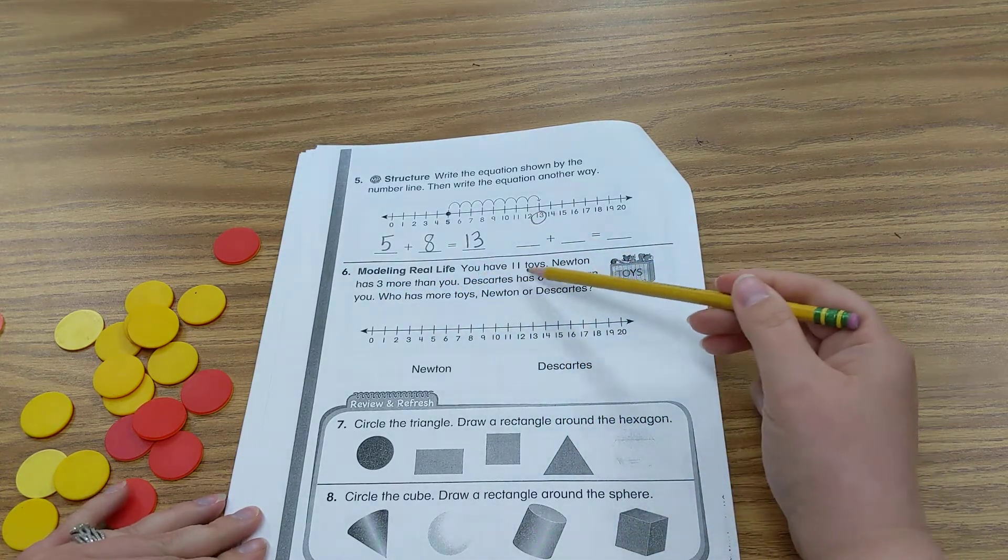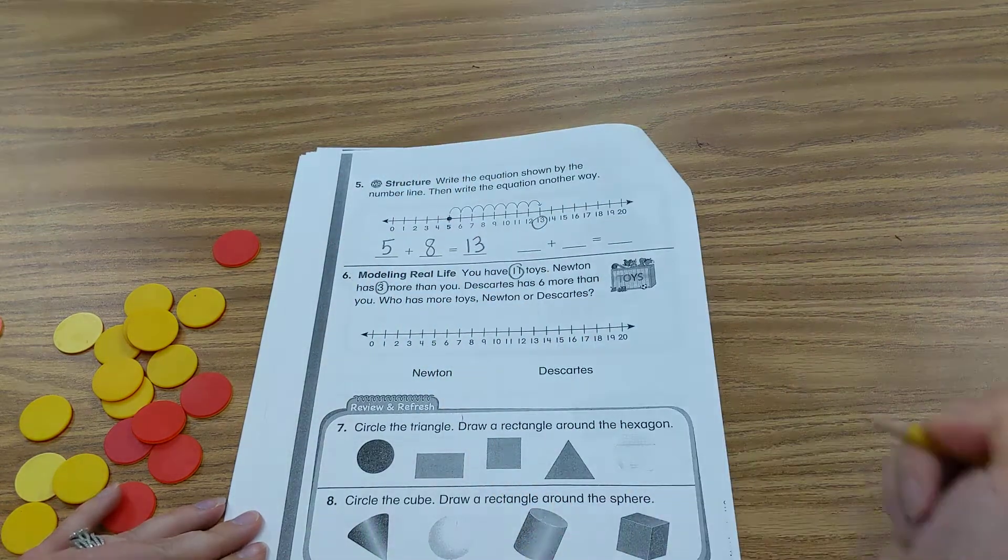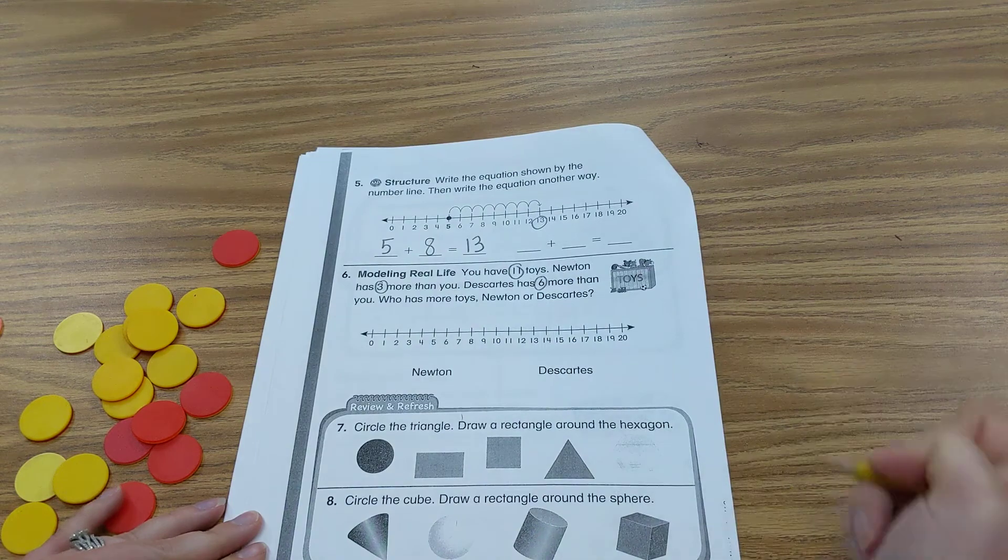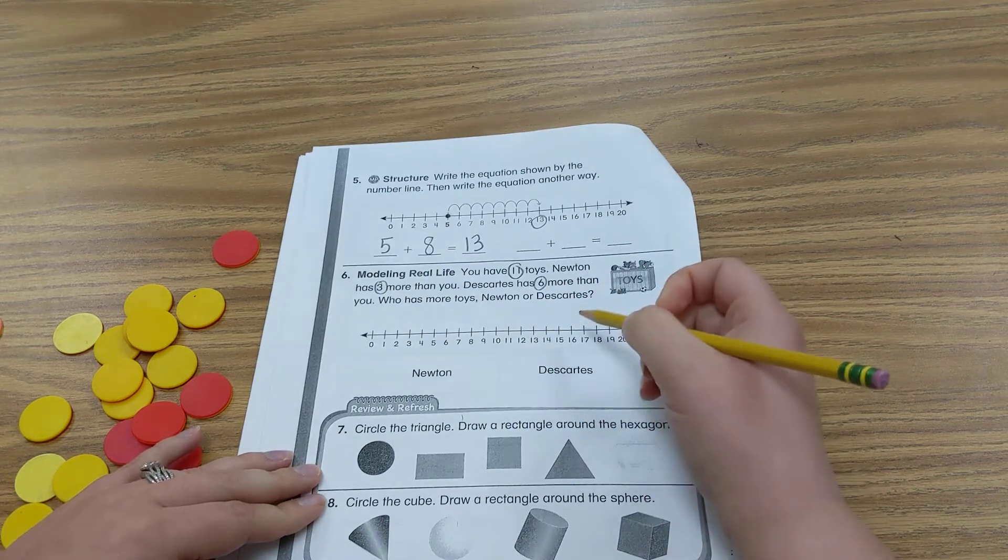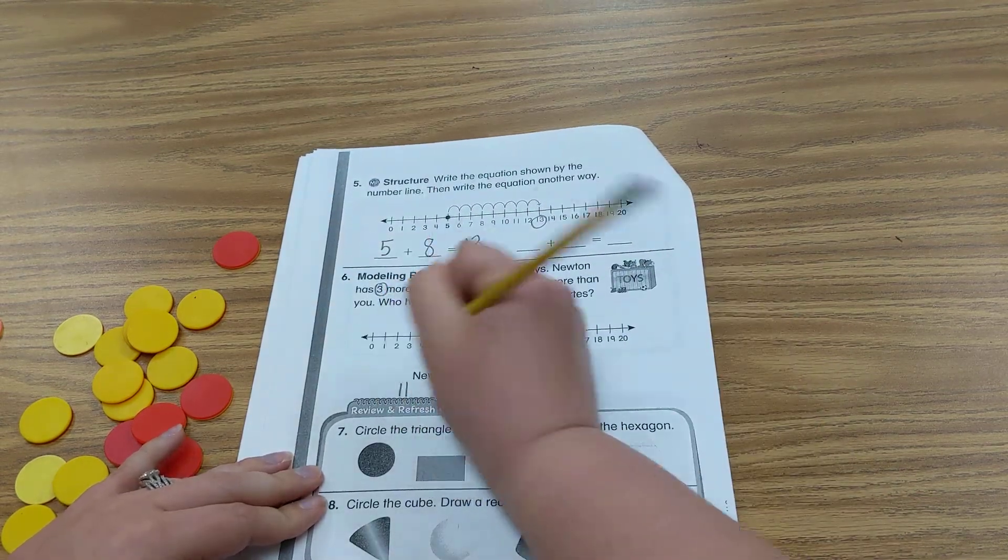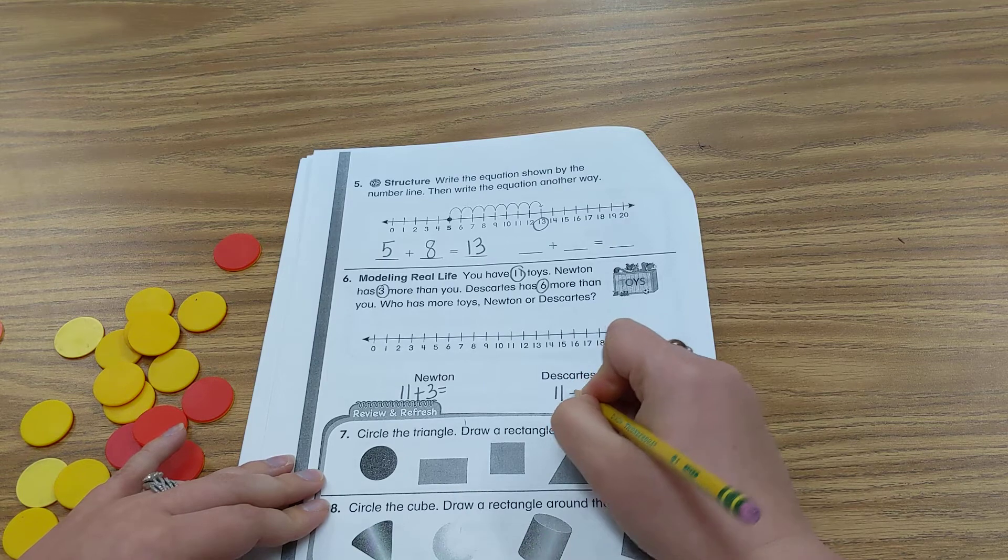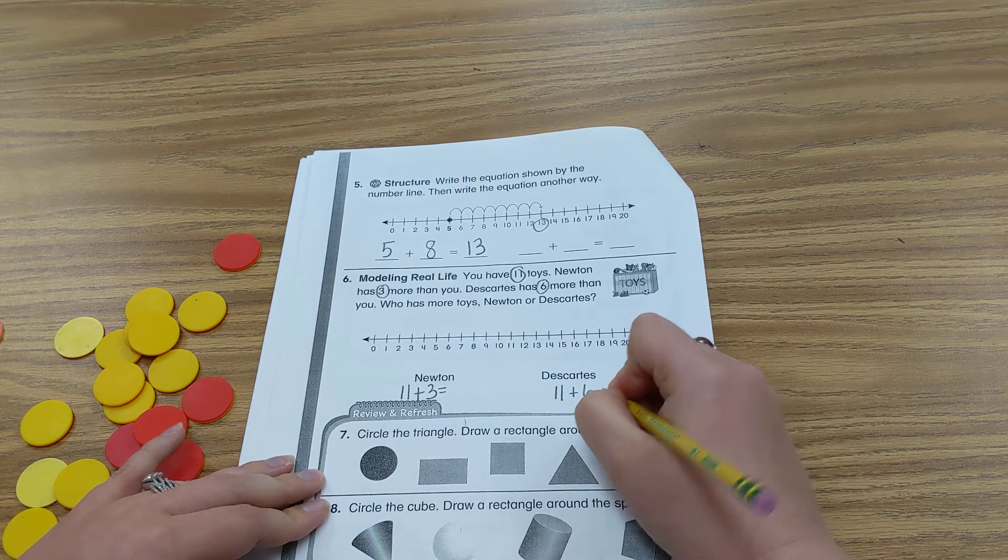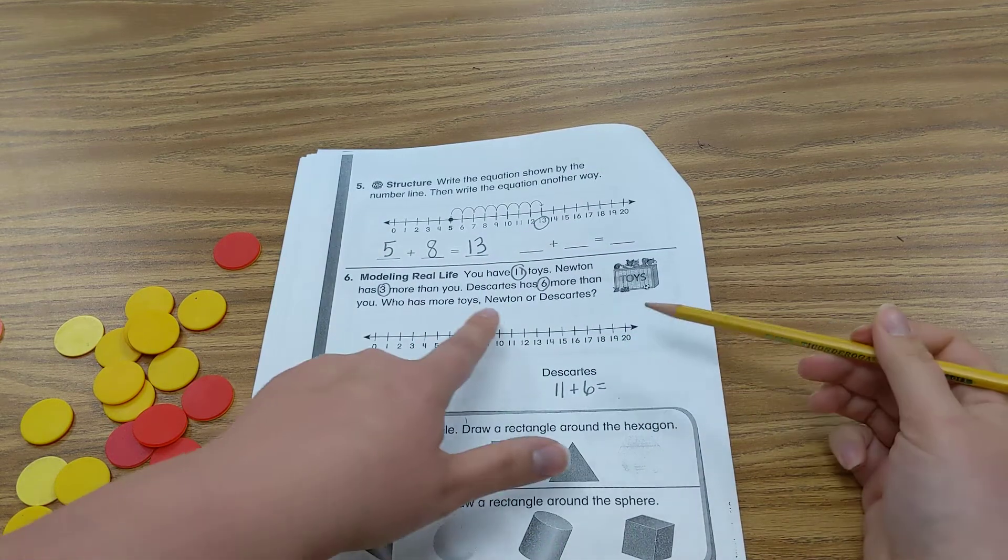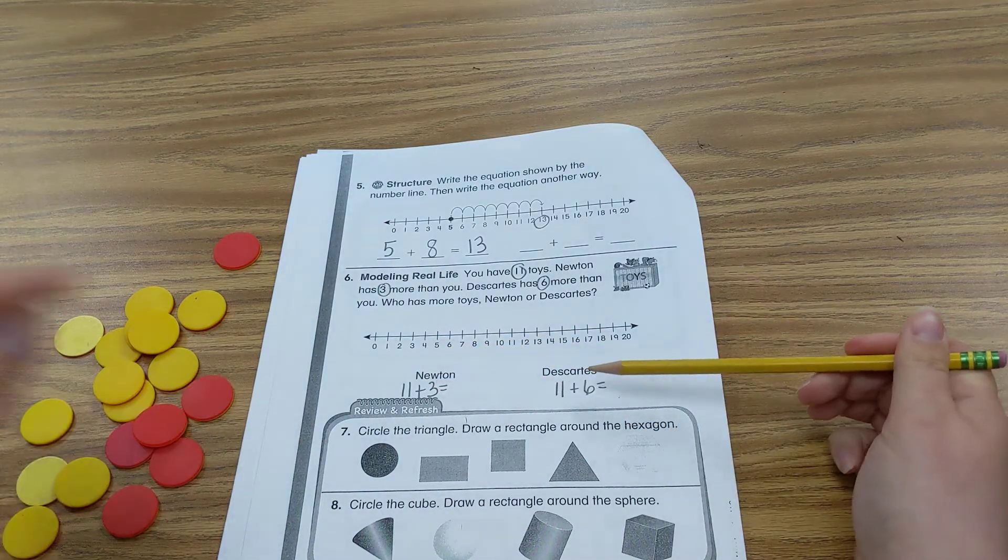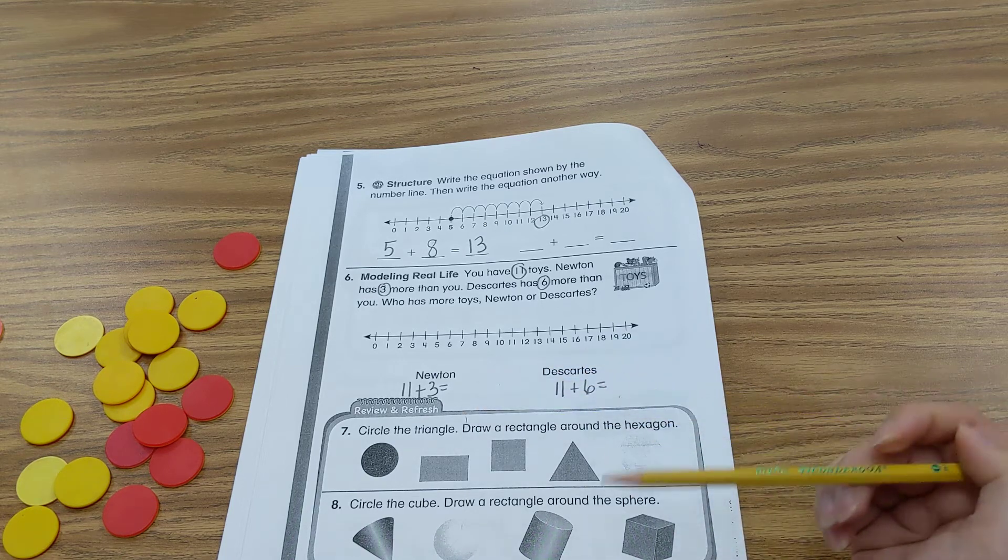Modeling real life. You have 11 toys. Newton has 3 more than you. Descartes has 6 more than you. Who has more toys, Newton or Descartes? So we know Newton has 11 plus 3 more. And Descartes has 11 plus 6 more. I want you to figure out these equations. So figure out your sum using your number line and circle the name that has the most toys. Does Newton have the most or does Descartes have the most?